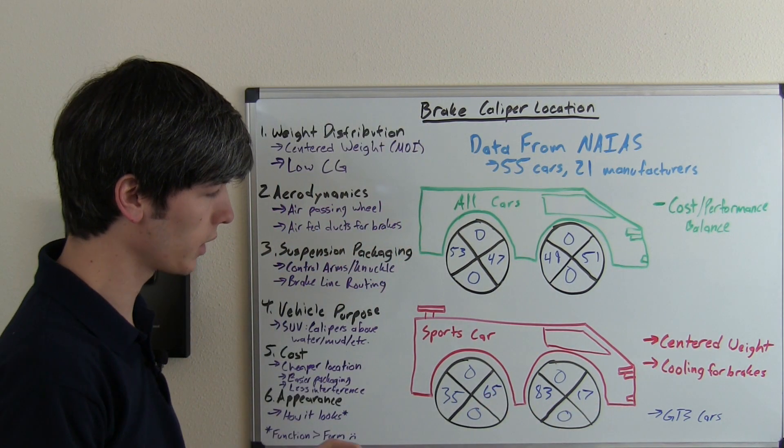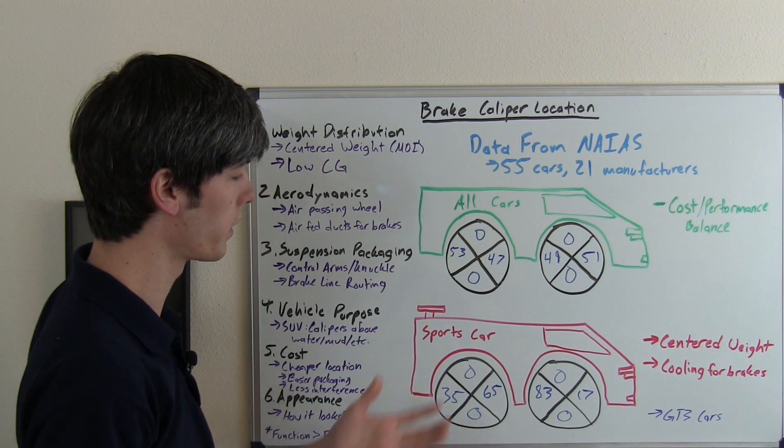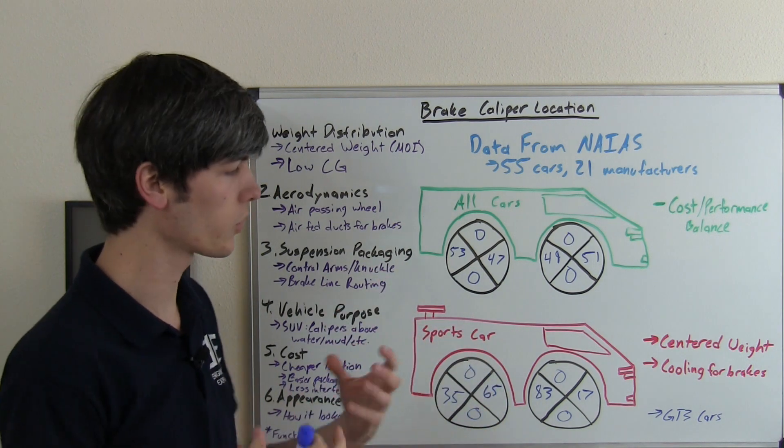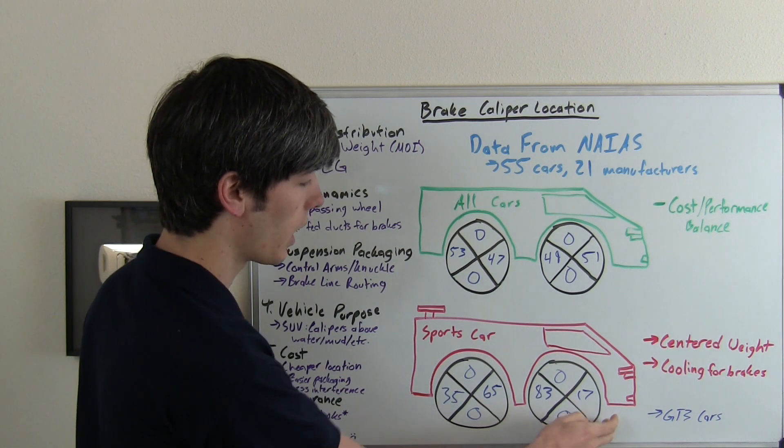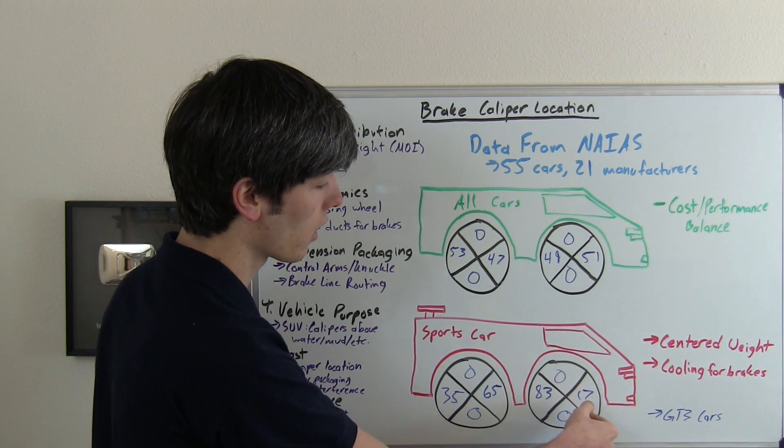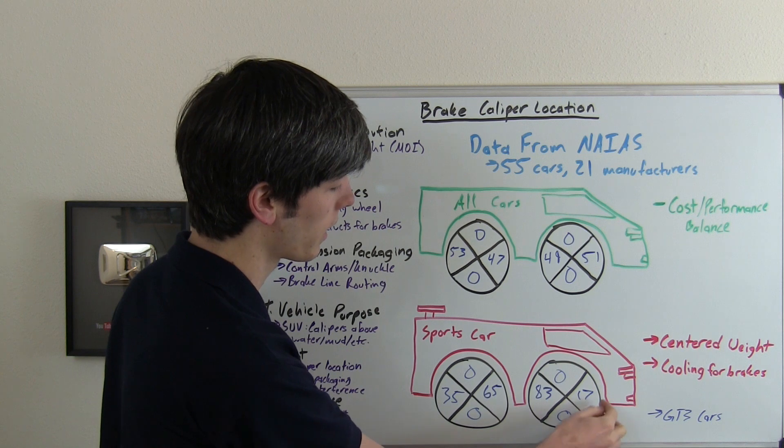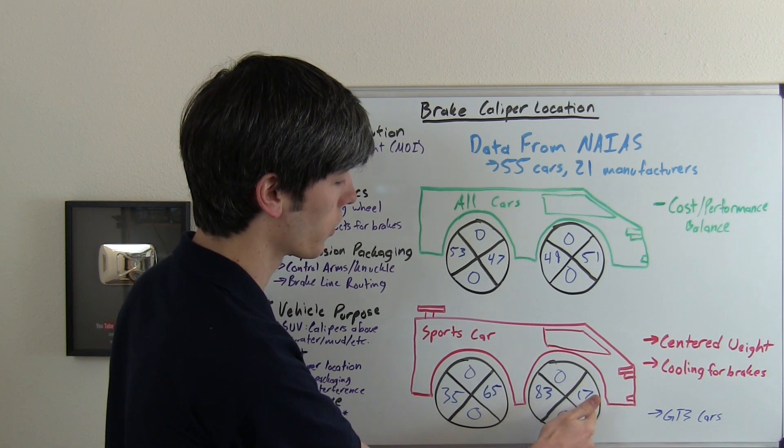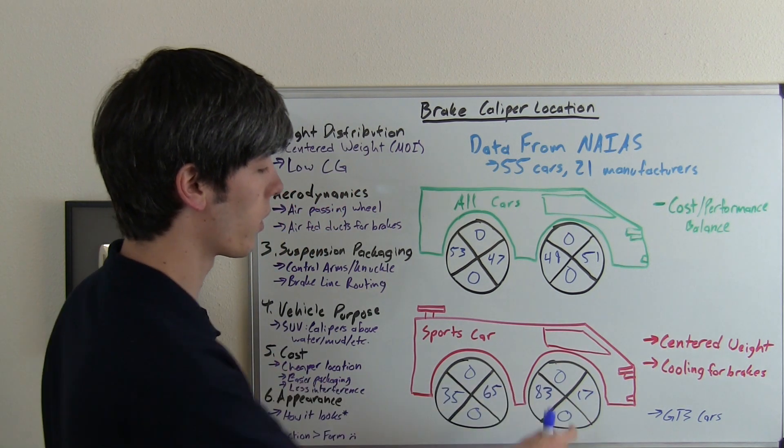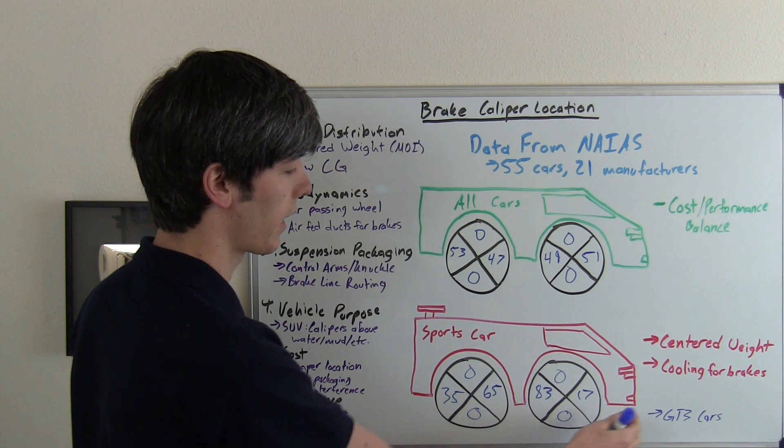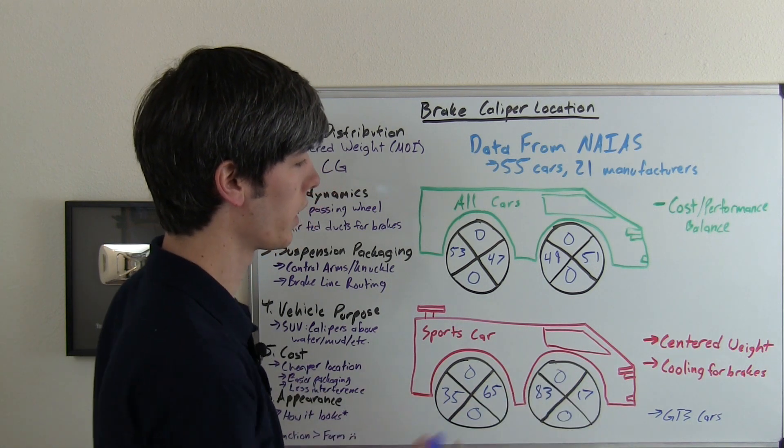So what this is telling me is what they're probably going for with these performance oriented cars is to have the weight centrally located. And then I would imagine up front that they've got air cooling ducts for the front brake that they've probably got routing towards this. And that's why they want to keep the weight towards the back and then also have plenty of cooling for the brakes.